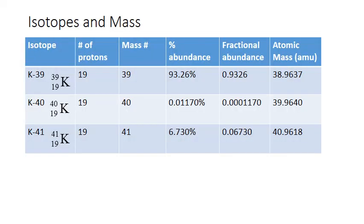So let's look at an example of this with the element potassium. Potassium has three stable isotopes: potassium-39, potassium-40, and potassium-41. Here's the atomic notation for each of those.